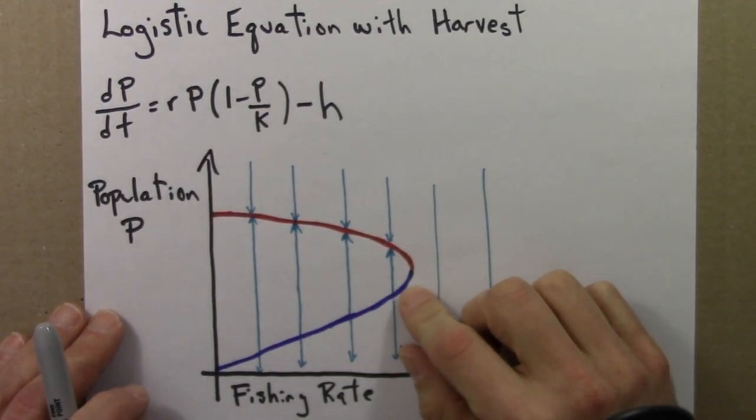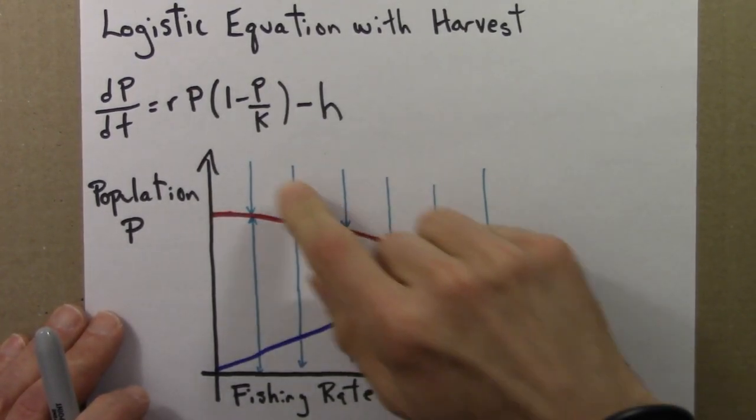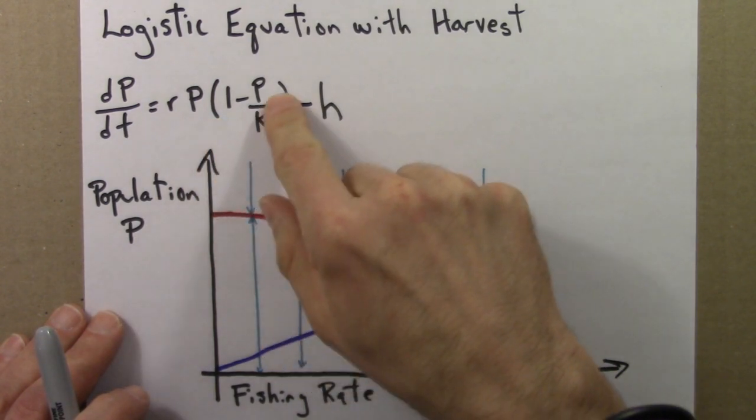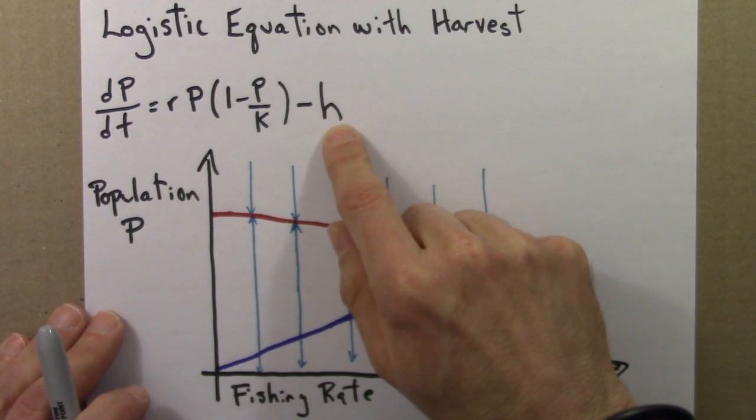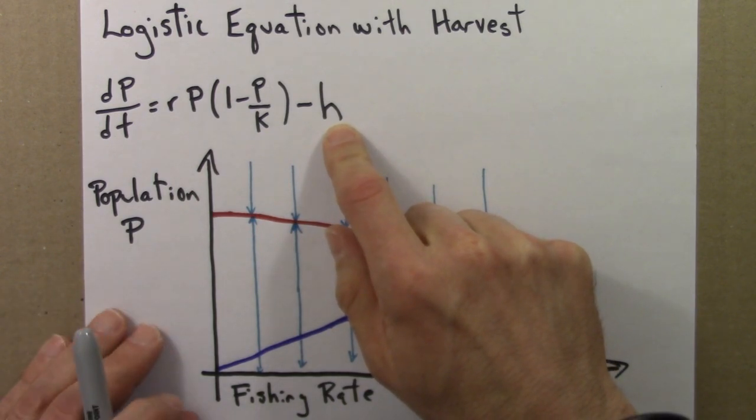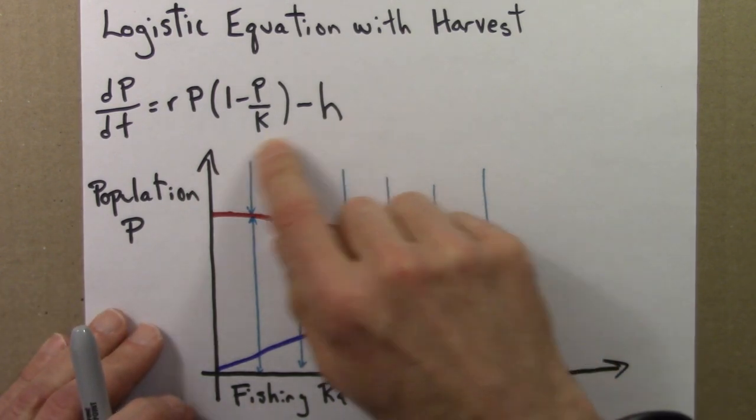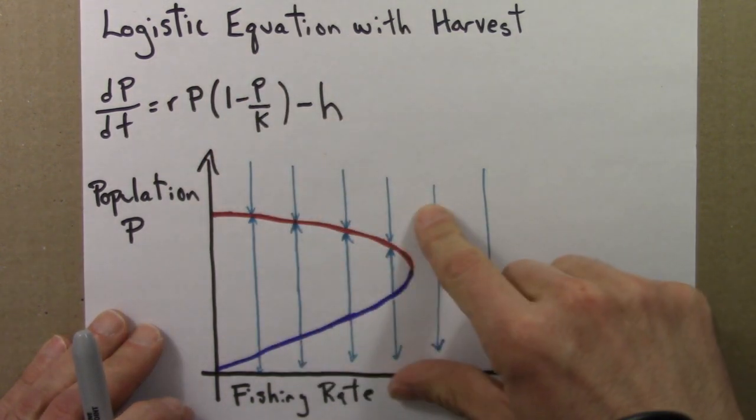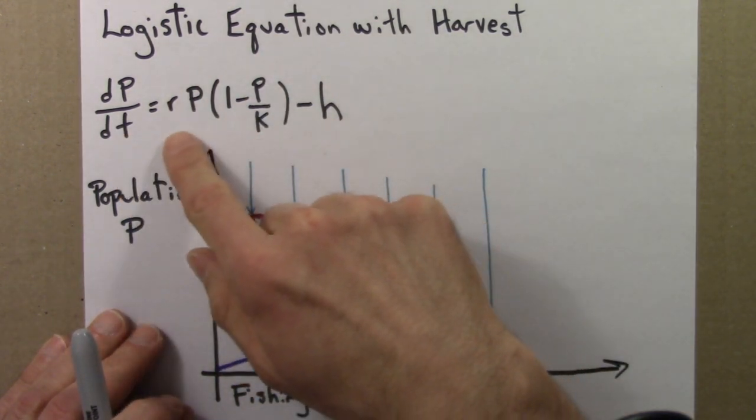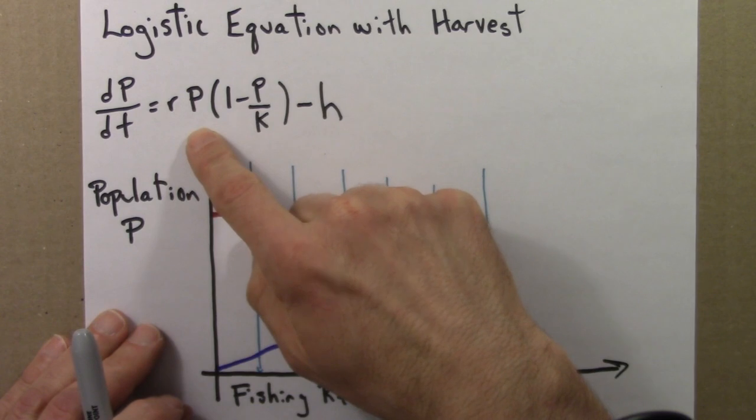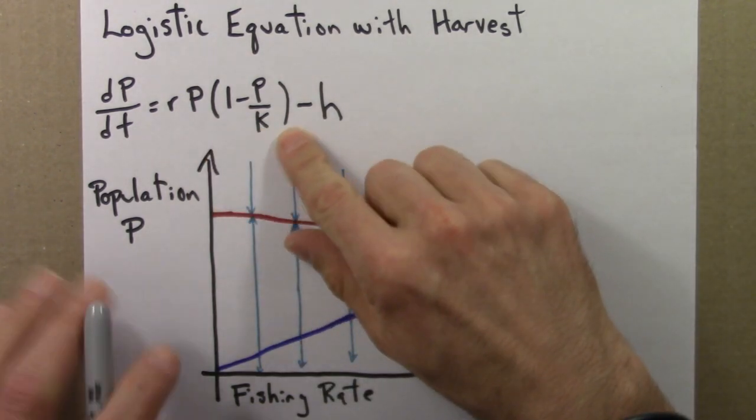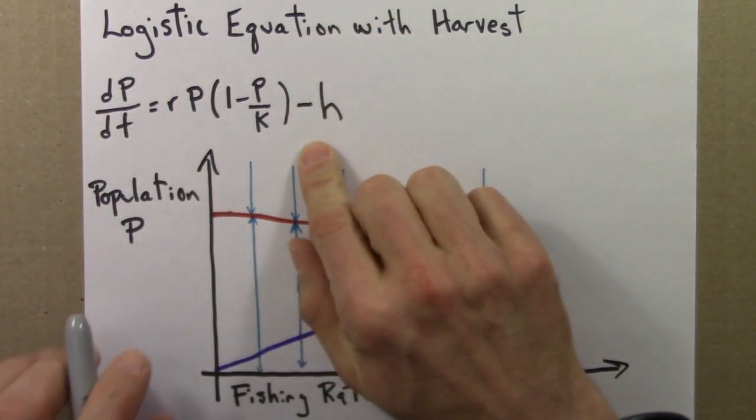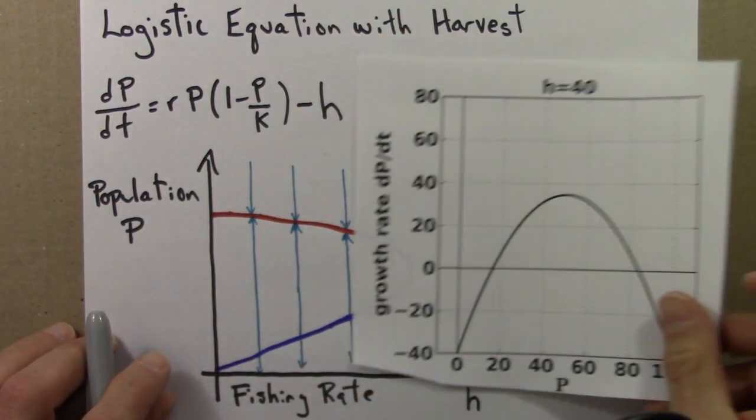So here's the logistic equation with a harvest term. dP/dt = rP(1-P/k) - h. k is the carrying capacity, and then h is the harvest, the number of fish or whatever that are caught every year. And before we talk about the bifurcation diagram, just a reminder that the right hand side of this equation is quite well behaved. This is just an upside down parabola, this term here, and the h just shifts the whole graph down.